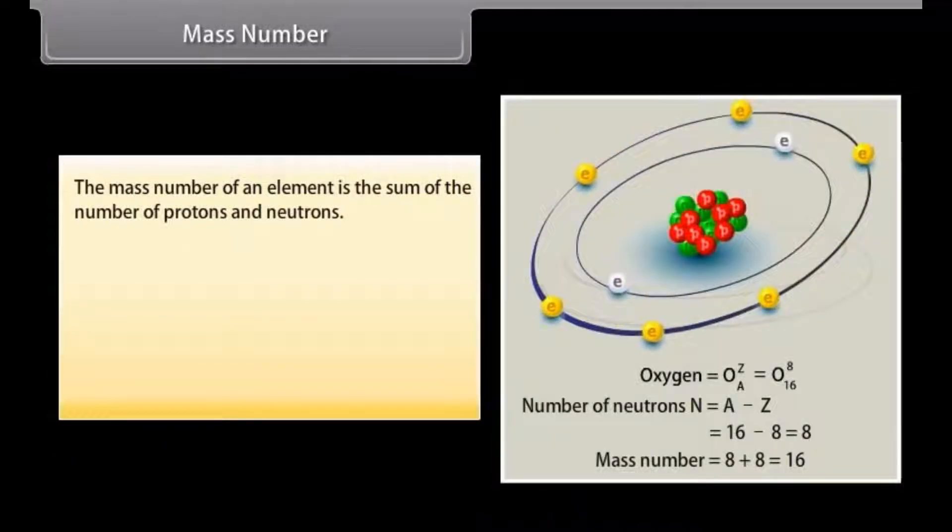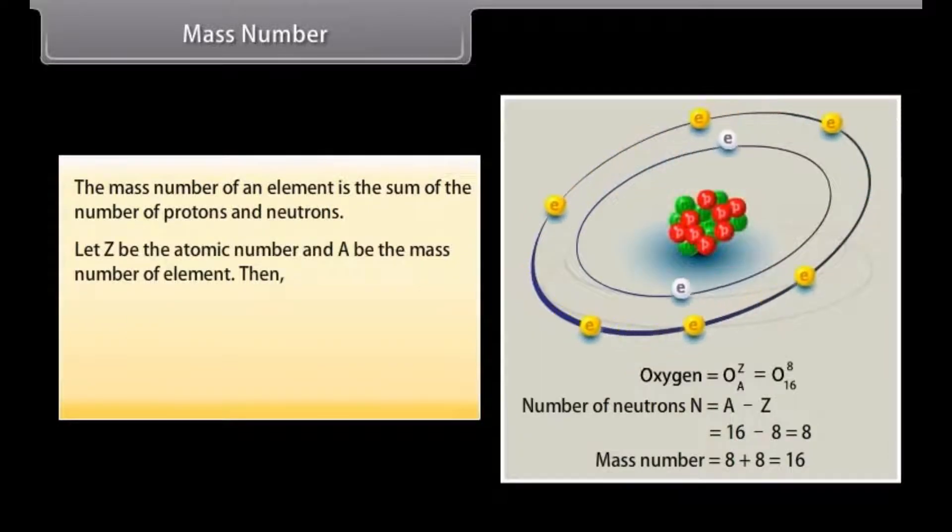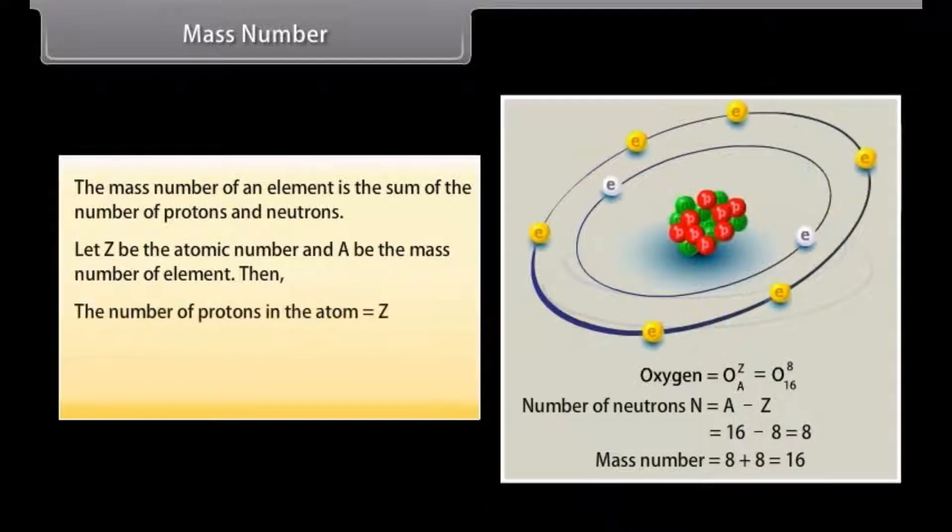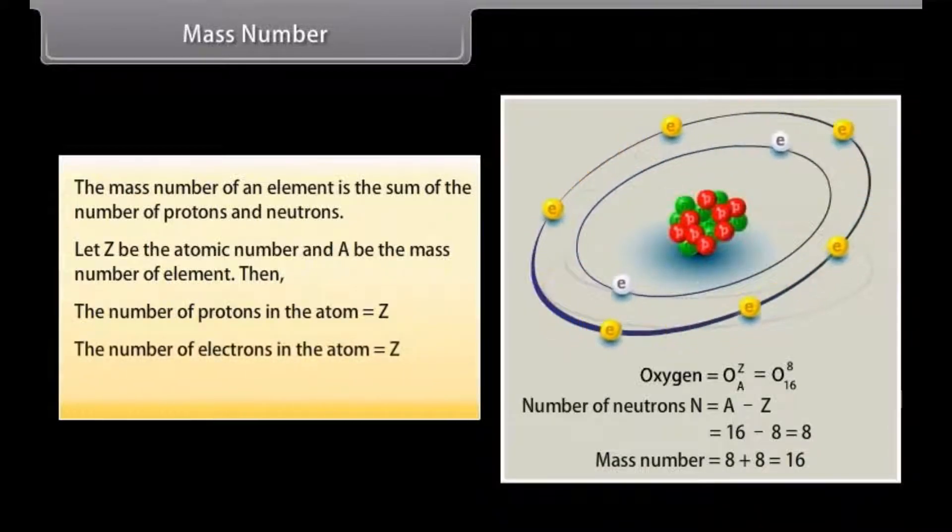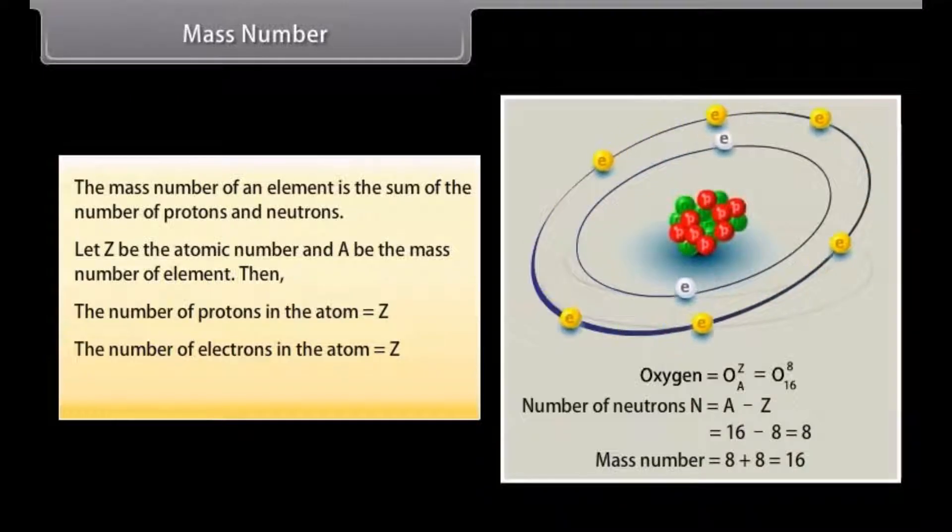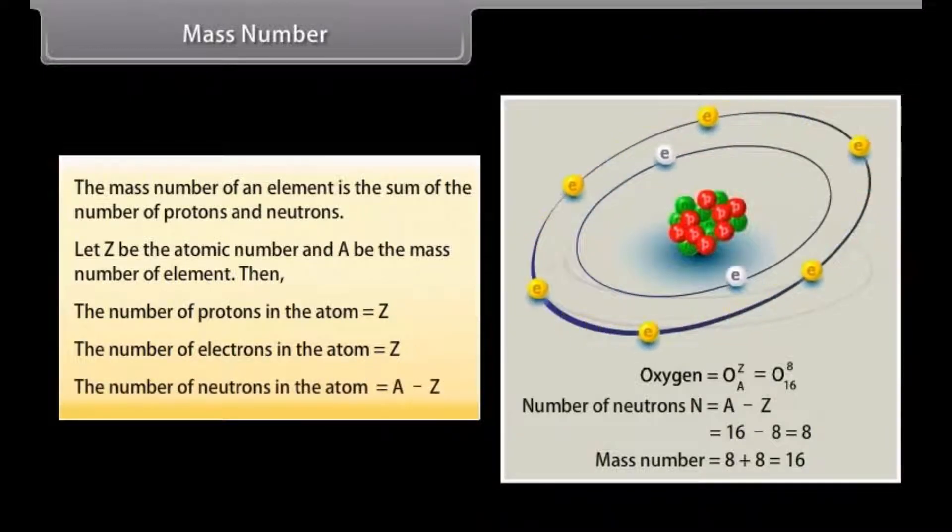Mass number. The mass number of an element is the sum of the number of protons and neutrons. Let Z be the atomic number and A be the mass number of element. Then the number of protons in the atom is equal to Z. The number of electrons in the atom is equal to Z. The number of neutrons in the atom is equal to A minus Z.